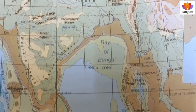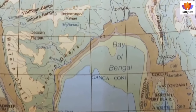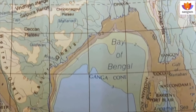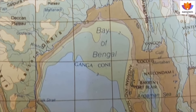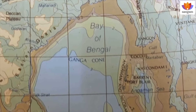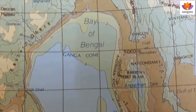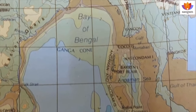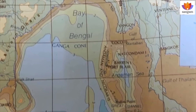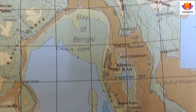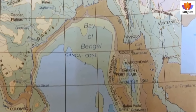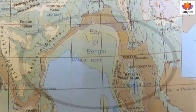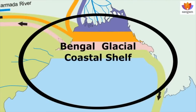During the glacial maximum, the sea level subsides by about 400 feet or 130 meters and the Bengal coastline recedes, connecting the Andamans with the mainland. In the physical map of India, we find the Bay of Bengal region having a very shallow depth. During the last glacial period, for several thousand years, a huge coastal landmass surfaced between the Bengal and Myanmar coast, which is referred to as the Bengal glacial coastal shelf in this book.